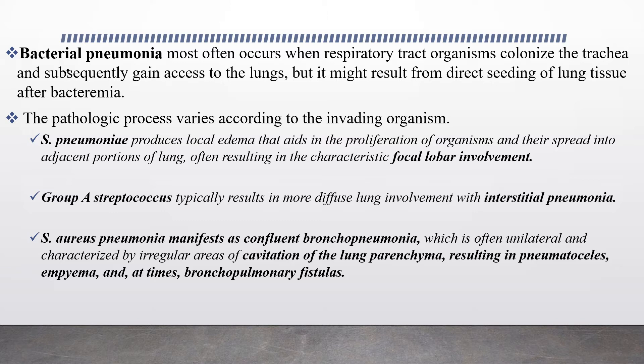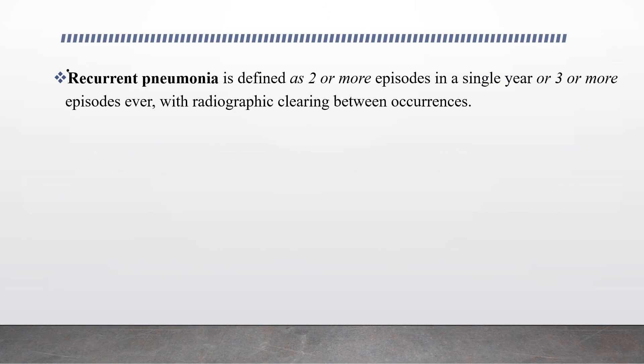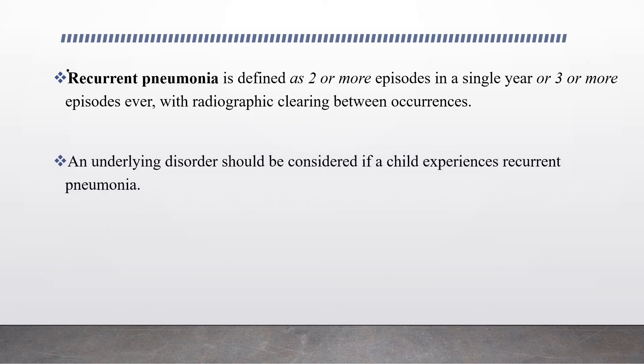Staphylococcal pneumonia manifests as confluent bronchopneumonia, which is often unilateral and characterized by irregular areas of cavitation of the lung parenchyma, resulting in pneumatocele, empyema, and at times bronchopleural fistula. Recurrent pneumonia is defined as two or more episodes in a single year or three or more episodes ever with radiographic clearing between occurrences. In such cases, an underlying disorder should be considered.